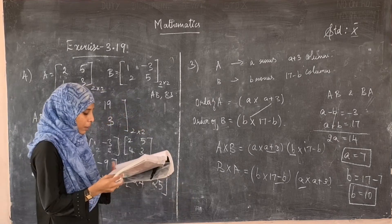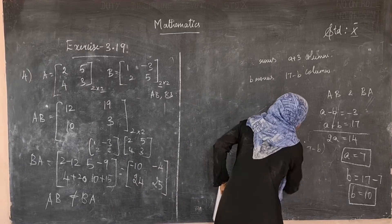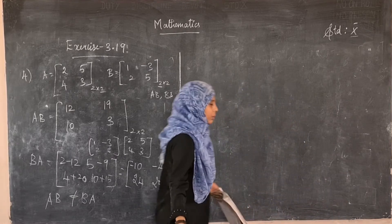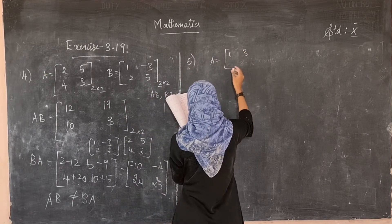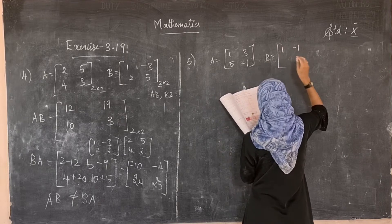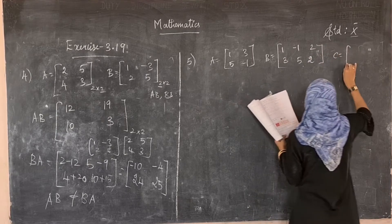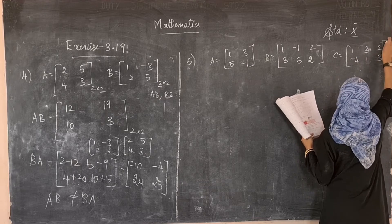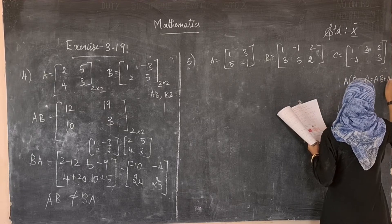The fifth sum asks us to verify the distributive property: A(B+C) = AB + AC. They have given A = [1, 3; 5, −1] of order 2×2, B = [1, −1, 2; 3, 5, 2] of order 2×3, and C = [1, 3, 2; −4, 1, 3] also of order 2×3.